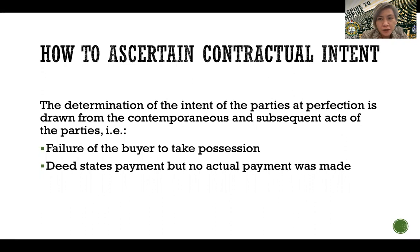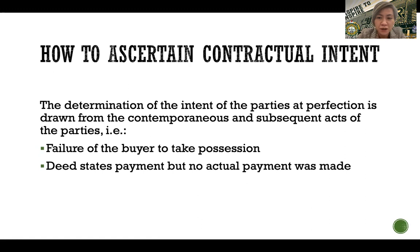How do we ascertain the contractual intent of the parties with respect to the price? We determine it based on their contemporaneous and subsequent acts — for example, like the failure of the buyer to take possession of the property being sold. Those are indications to tell us whether there was legal intent on the part of the seller to receive the price and legal intent on the part of the buyer to pay the price.